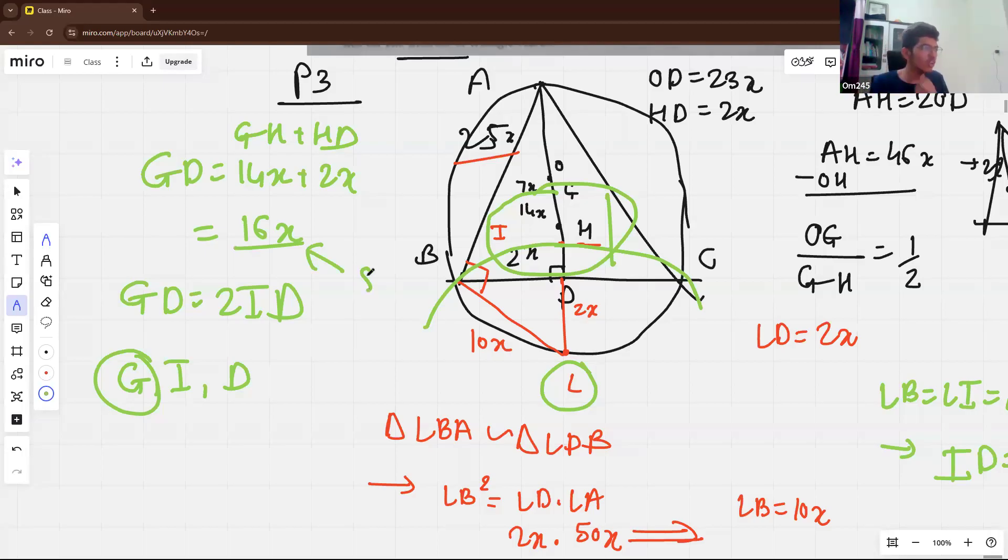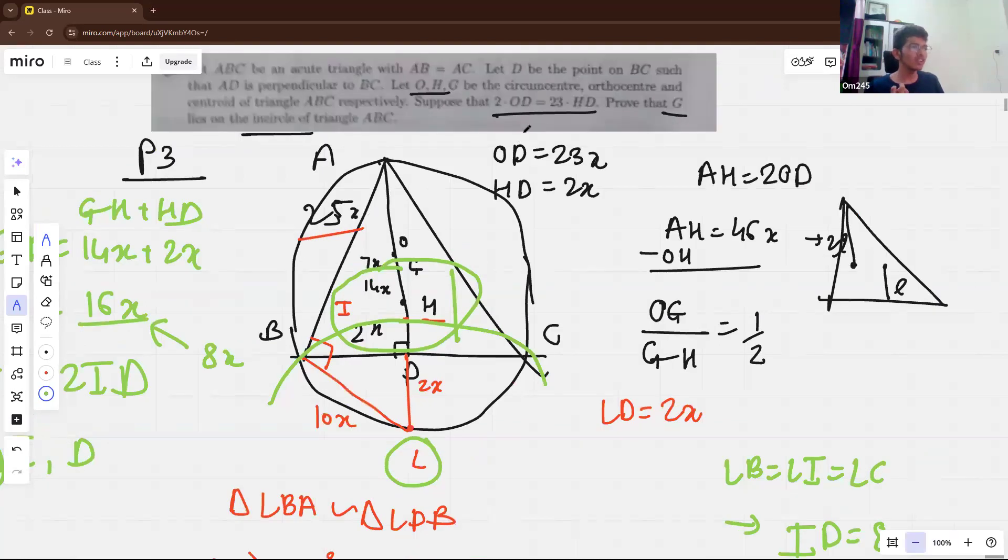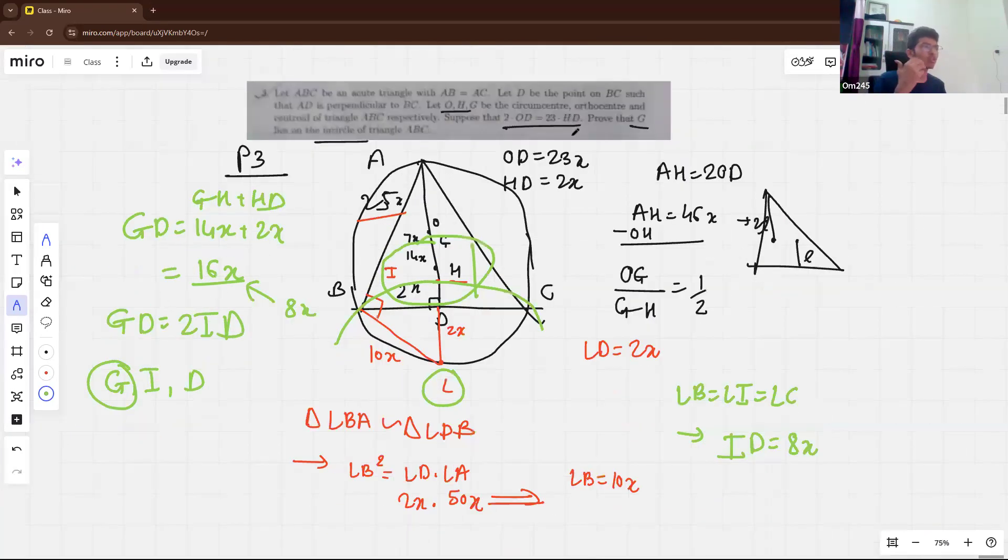So key point in this problem was to introduce the midpoint L. The ratio thing and calculation with L. So actually this ratio here is 23 to 2 comes out to be so nice that G lie on that incircle. So I hope you find solution interesting. Thanks for watching.